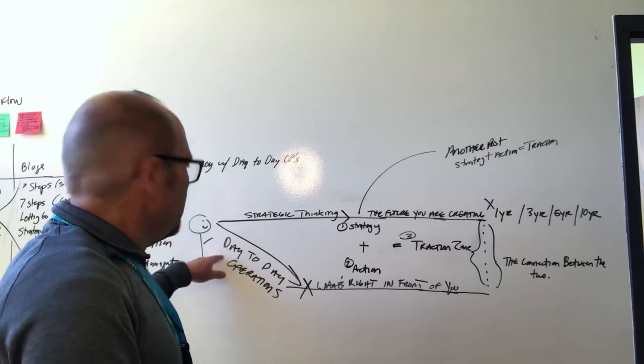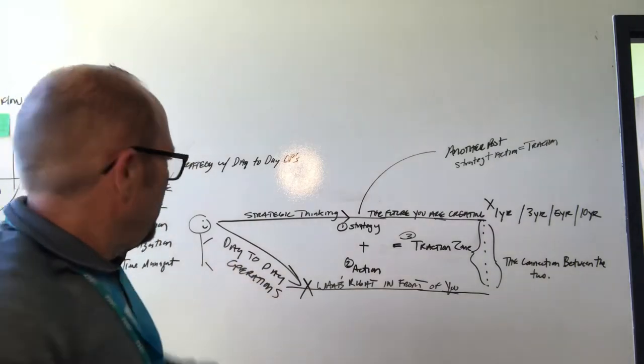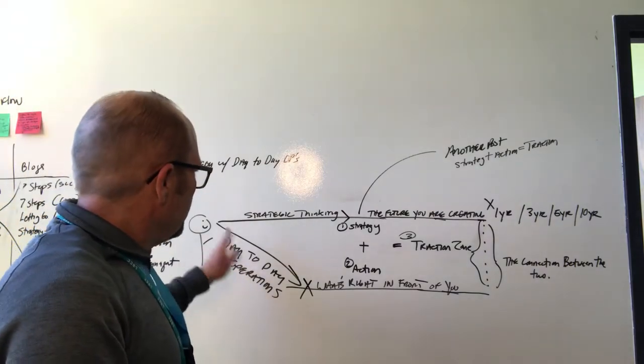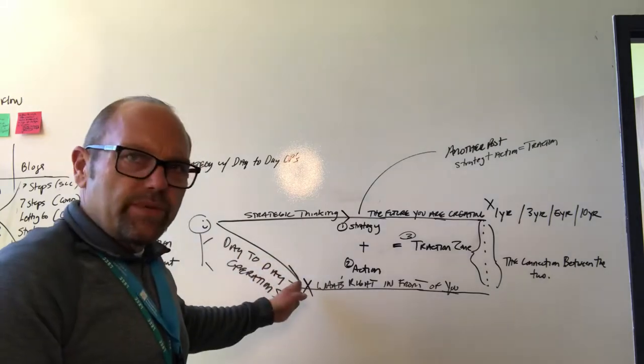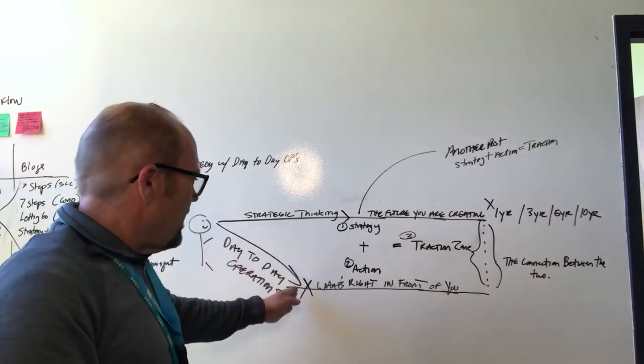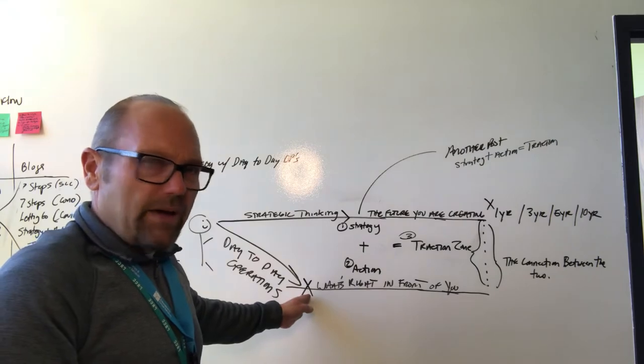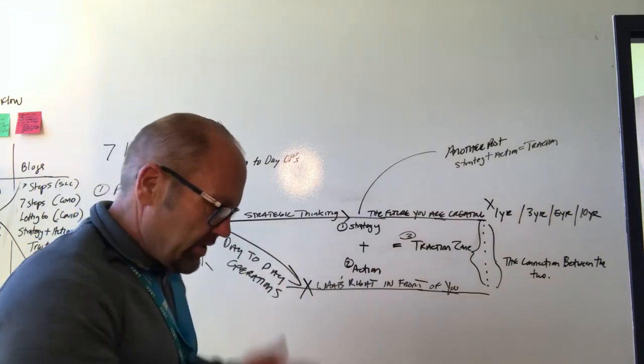So if you can see this person—that is my drawing of a person—this person is focusing right now, if we point ourselves in this direction, to day-to-day operations. The X marks the spot. Day-to-day operations are looking down, looking at exactly what needs to get done on that particular day.